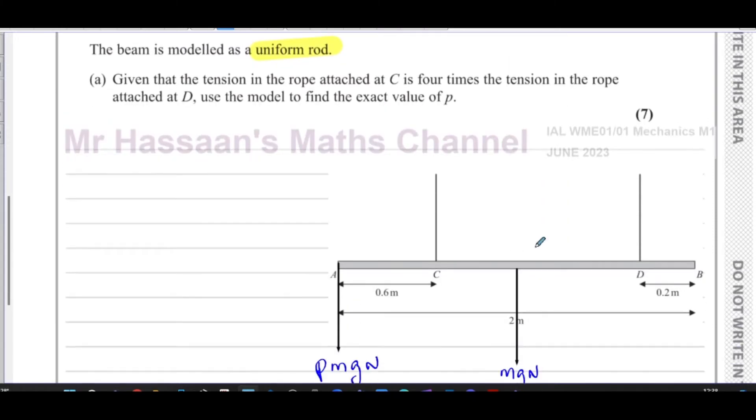Then you have the tension in the rope. It says the tension in the rope at C is four times the tension in the rope at D. So if this is T, then this will be four times T.